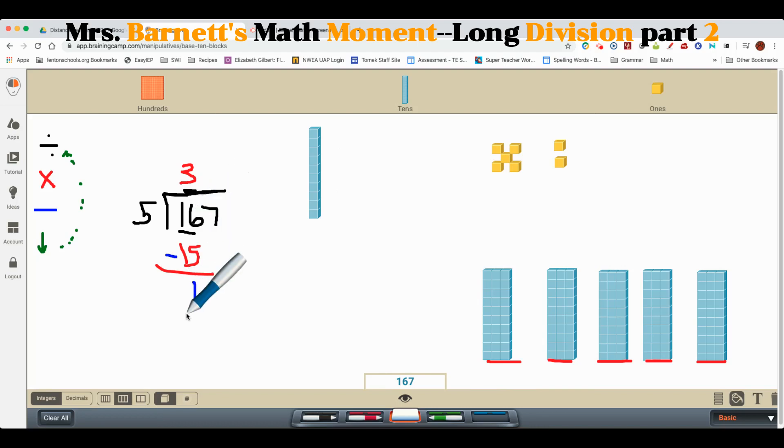I now have one rod left. If you can see, I'm in the tens place: ones, tens, hundreds. So I still have a single rod which is worth 10. Then I have these seven left, so I'm going to bring down that number.